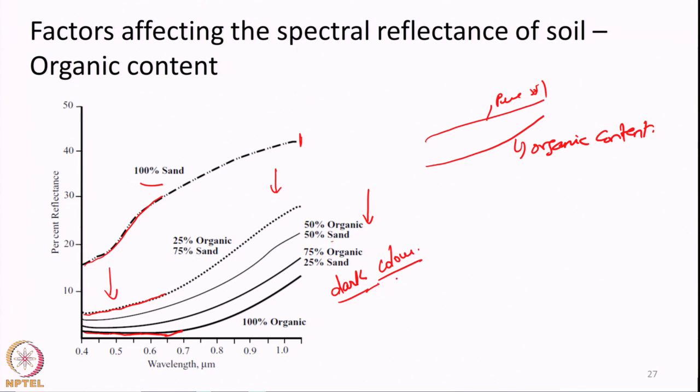Some organic soils may be brown, some may be dark — it depends on the climate and the material with which they are mixed. But in general, if the soil is pure it will have a higher reflectance when compared with the same soil after getting mixed with organic material.